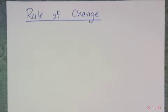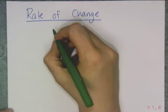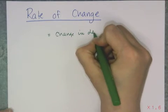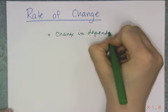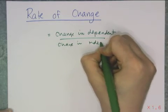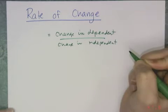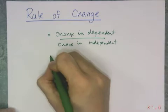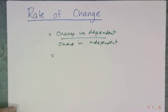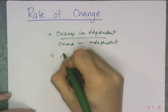Speed is an example of something we call a rate of change. Rate of change is a generic term that applies to everything. The rate of change is defined as the change in the dependent variable over the change in the independent variable. And we don't like writing the word change, so instead of writing the word change, we use the Greek letter delta to represent change.